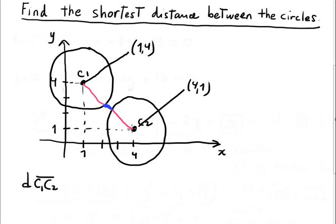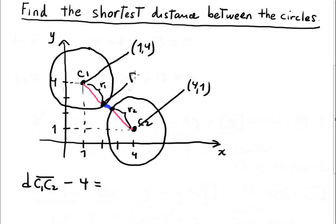The strategy for finding the shortest distance: find the distance between center 1 and center 2 using the distance formula, then subtract radius 1 and radius 2. By the way, both radii are the same — they're 2 — so subtract 4. That's the shortest distance, the distance from point P1 to point P2.